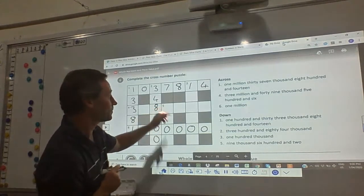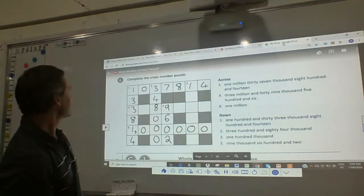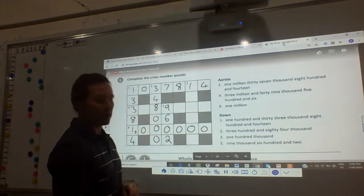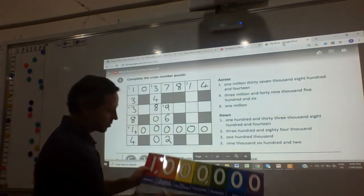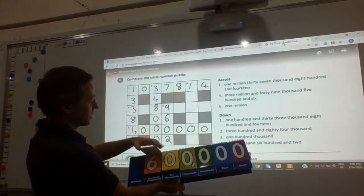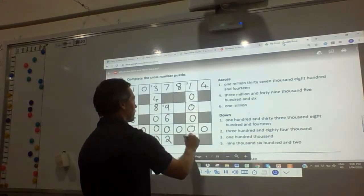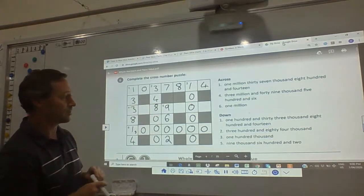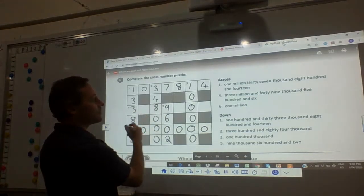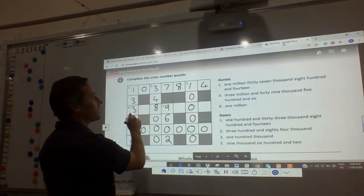So let's go to five down: 9,602. Which leaves three down: 100,000. I could check it - 100,000. Which leaves the last one, four across. We've only got a few gaps to fill in. What do you reckon? Four across: 3 million and 49,000.